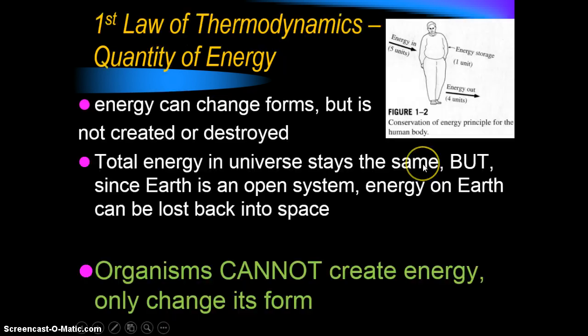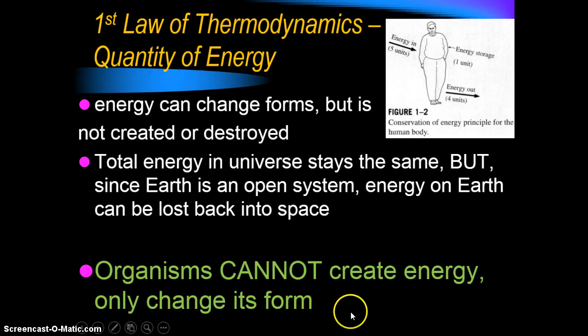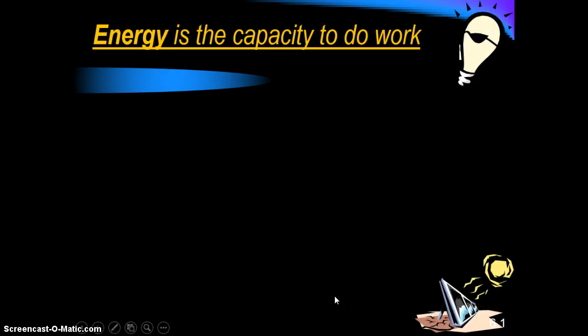There are also two laws that govern the energy that comes in and out. The first law of thermodynamics talks about the quantity of energy — basically it says you can't create or destroy energy; it has to come from somewhere and go somewhere. What that means in this unit is that organisms can't create energy, but they can change its form.